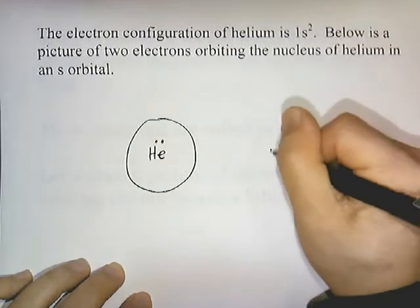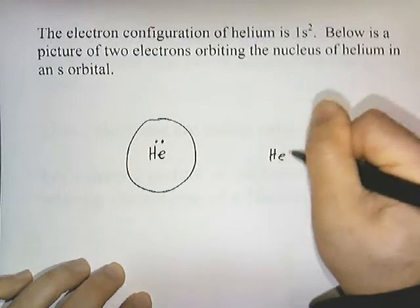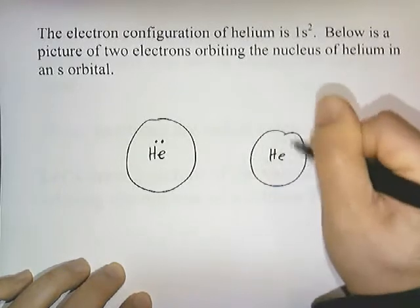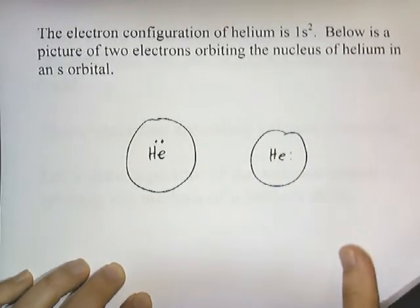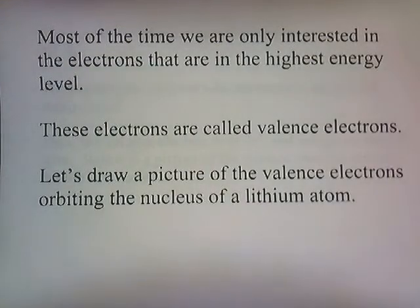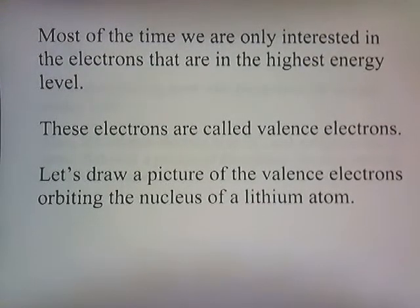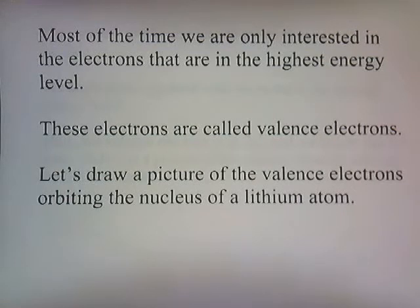I could have drawn this differently — it doesn't really matter which side we put it on. Most of the time, we're only interested in the electrons that are in the highest energy level. These electrons are called valence electrons.